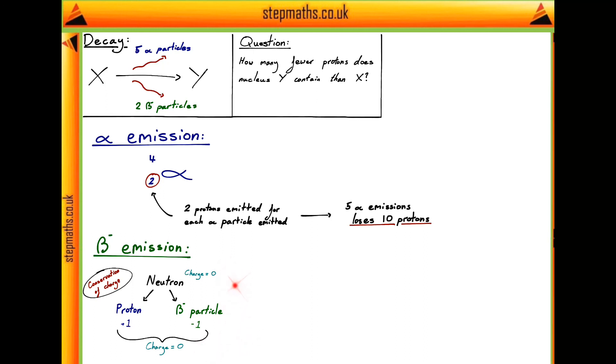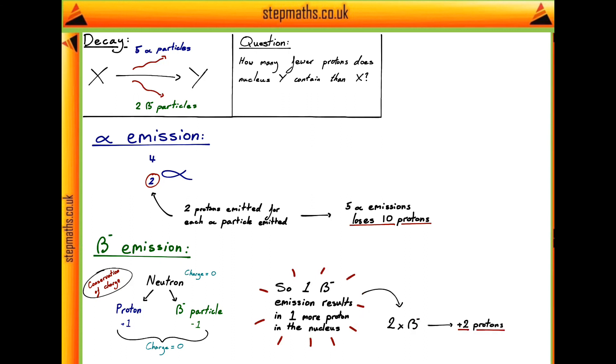Now if we look at our little diagram, then we can see that with each beta minus emission, we get one more proton in the nucleus. So one beta minus emission is also one more proton in the nucleus, and therefore, if we have two beta minus emissions, we shall gain two protons.